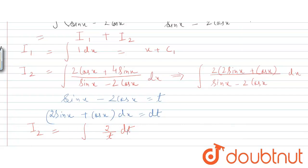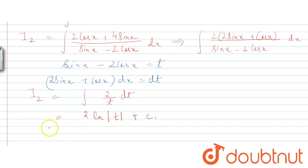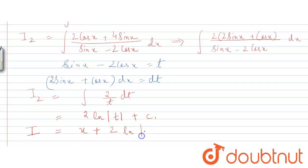Integrating, I2 becomes 2 log t plus c, and substituting back, t equals sin x minus 2 cos x. So I2 becomes 2 log|sin x minus 2 cos x| plus c2.